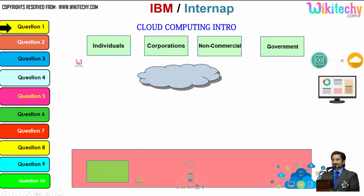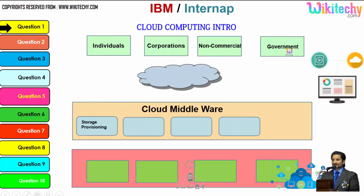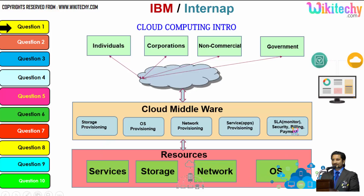There are different types of users: individuals, operations, non-commercial people, and government. From any of these users, they are able to access services, storage, operating systems, or networks via the cloud. The specialized software provided by the cloud service provider allows end users to access the resources. This is how the cloud computing architecture is structured.